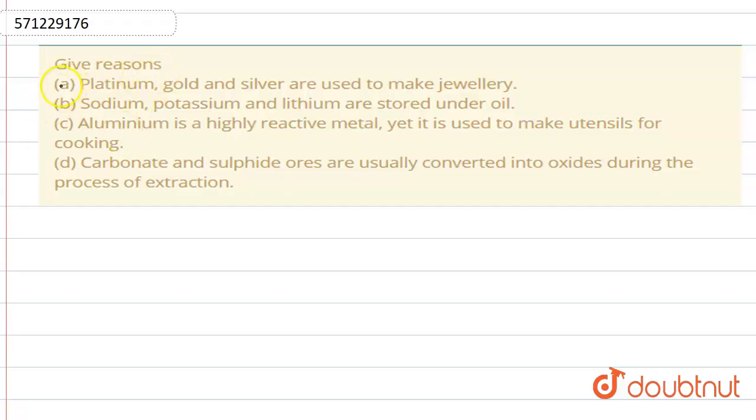We are given four parts and will discuss them one by one. First: Platinum, gold, and silver are used to make jewelry. The reason is these elements are used to make jewelry because they are noble metals. They do not react with other metals or oxygen, and do not corrode.